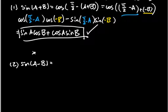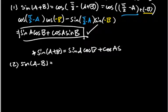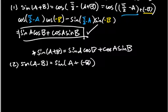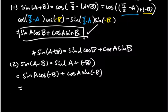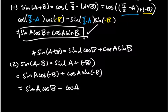Now we have sin(a + b), and we're going to use this directly to get the last identity. Sine of (a − b) is sine of (a + (−b)), so we have sine of the first angle times cosine of the second angle plus cosine of the first angle times sine of the second angle. By now you can see that the sine of (−b) term leads to a minus sign, giving us sin(a − b) = sin(a)cos(b) − cos(a)sin(b).